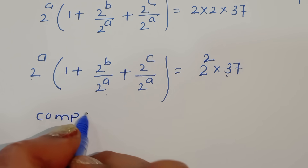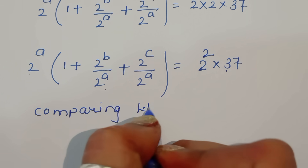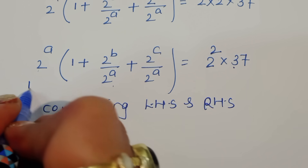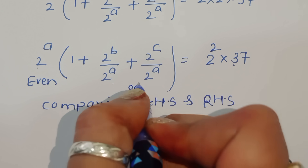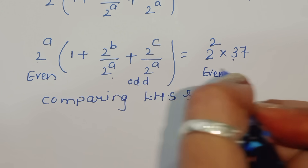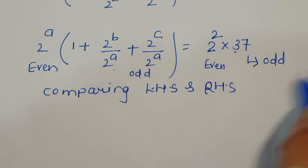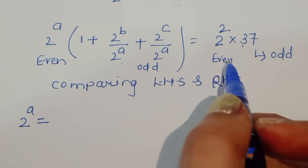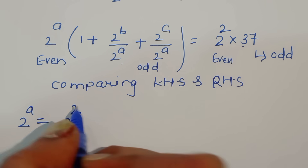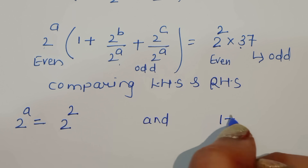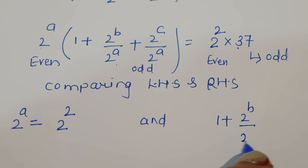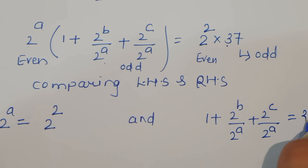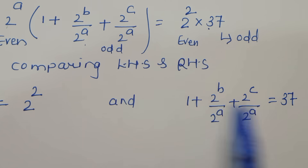Comparing LHS and RHS: 2 power a is even and the bracket term (1 plus ...) must be odd, matching 37 which is odd. So 2 power a equals 2 power 2 (even equals even), and 1 plus 2 power b upon 2 power a plus 2 power c upon 2 power a equals 37. In this way we get two equations.